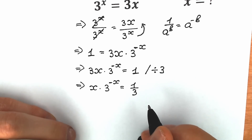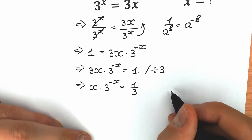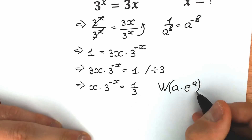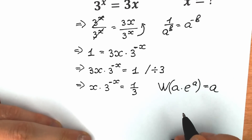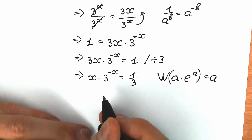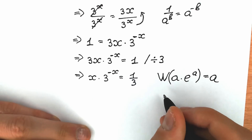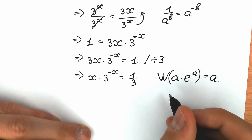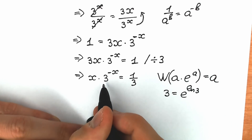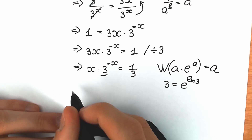Right now let's create a great expression for the Lambert W function. For those who don't know: when we have an expression like a times e to the power a and we apply the Lambert W function, as a result we have only a. So let's try to create this type of expression on the left side. First of all, let's create our e — we can change 3 by e to the power natural log 3, using natural log properties.